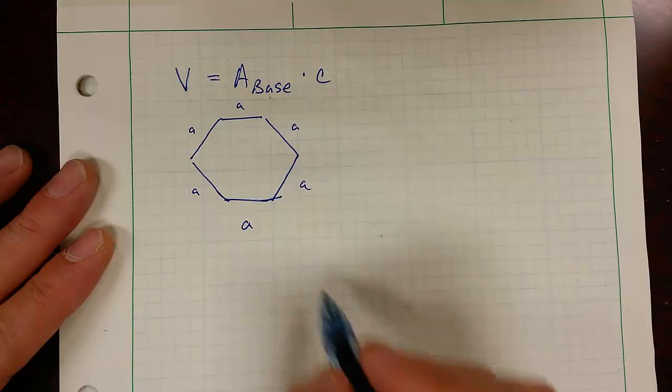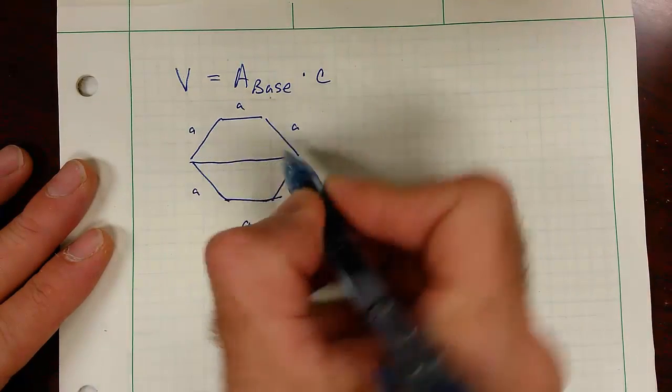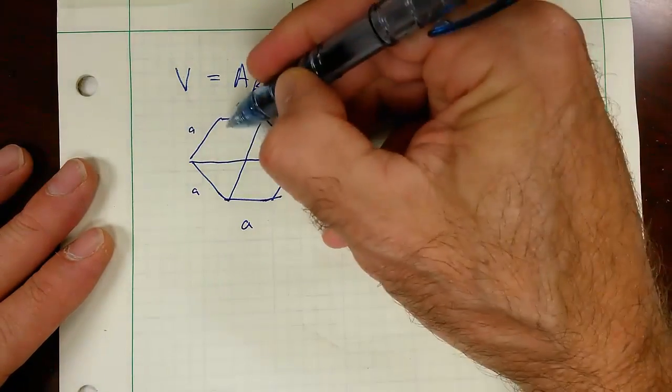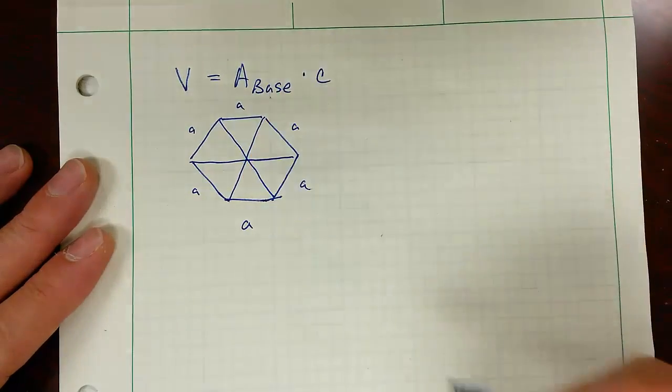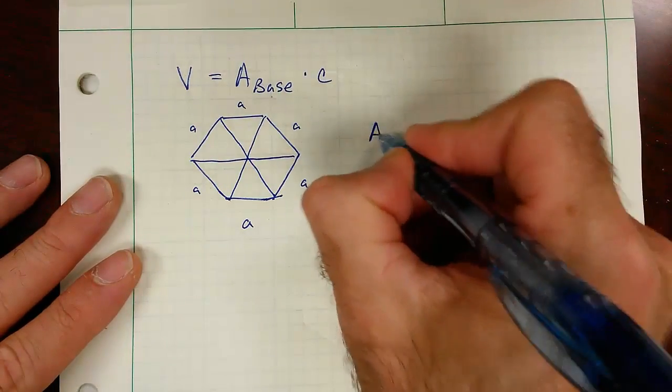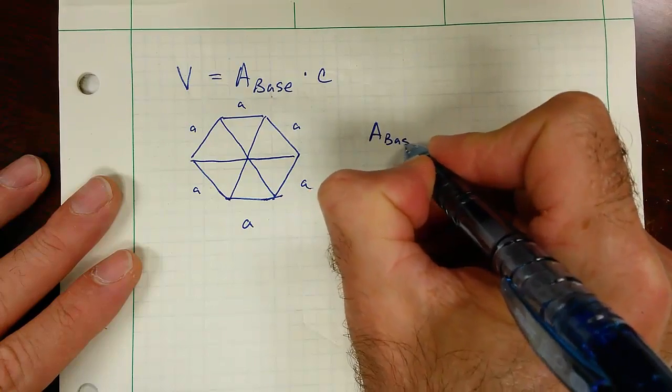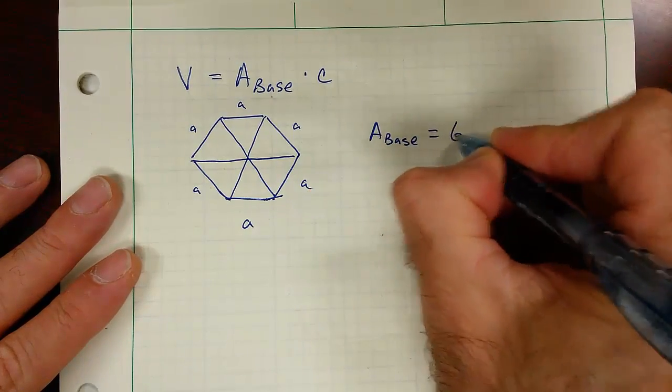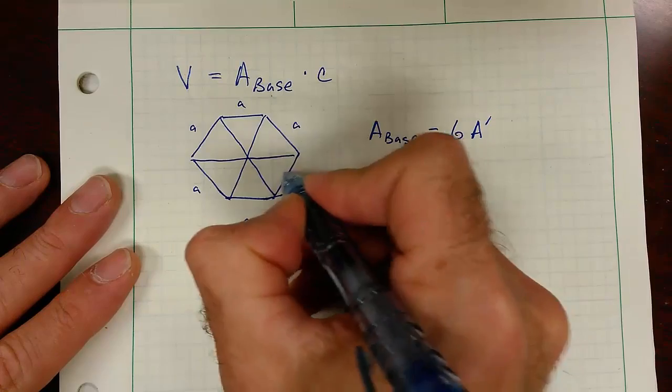And the easiest way for me to do this is divide this up into triangles. And the area of the base is six times the area of each triangle.